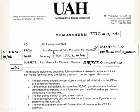Here's another example: the title in capitals in the middle, and in the To section you can put a general recipient like 'All UAH Faculty and Staff.' Write your name in From, comma, your position and your signature. Write the date in full. The subject in sentence case. You have your line, and there's the memo body with bulleted or numbered points.